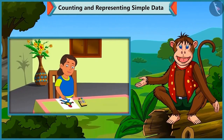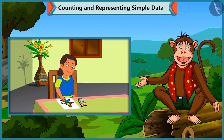Bubbly is filling colours in a picture with different shapes. While colouring, she wonders if she can count those different shapes and write their numbers separately, just as she counted the vegetables.